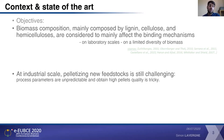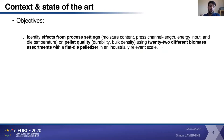The objective of this work was to first identify the effects of the process settings regarding moisture content, pressure on the die, energy inputs, and die temperature, which are important parameters during the pelletizing process in an industrial case, using 22 different biomasses and using a flat-type pelletizer in order to have an industrial-relevance scale.